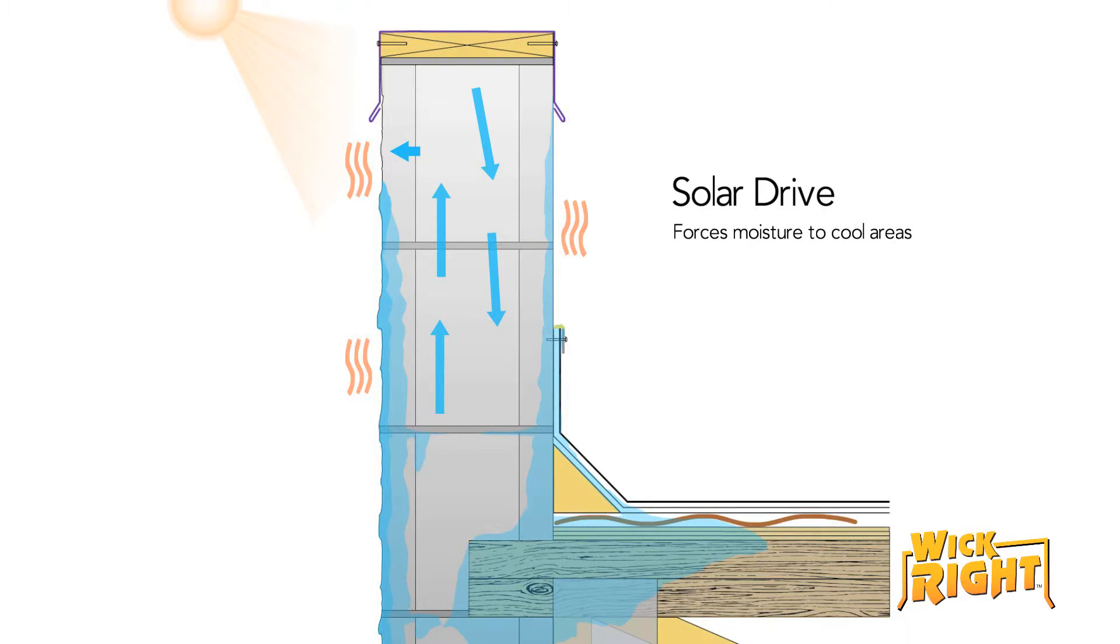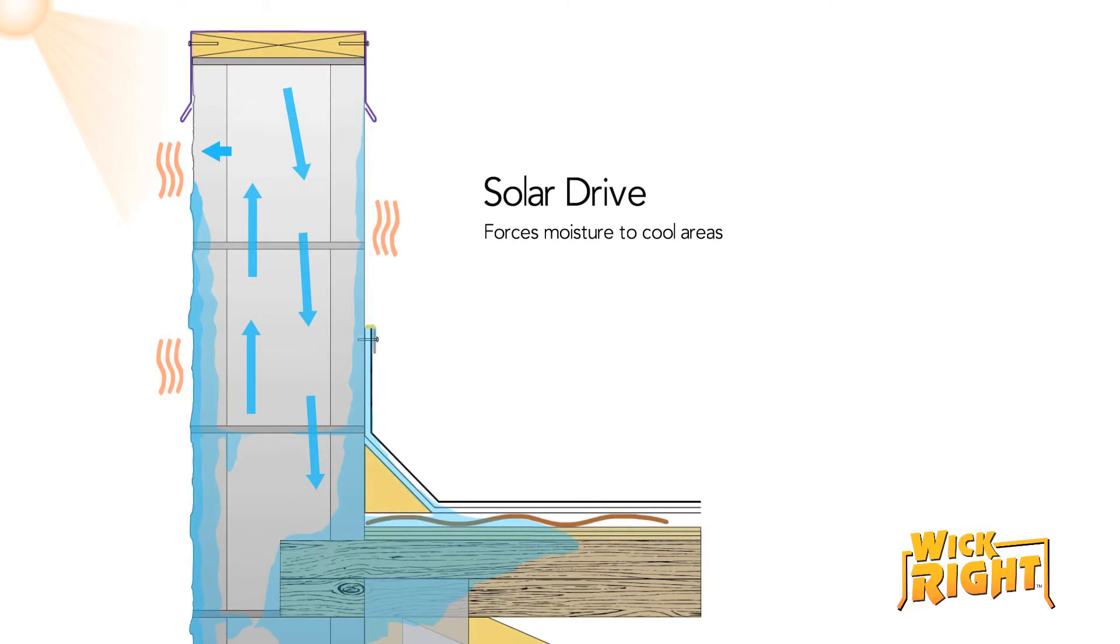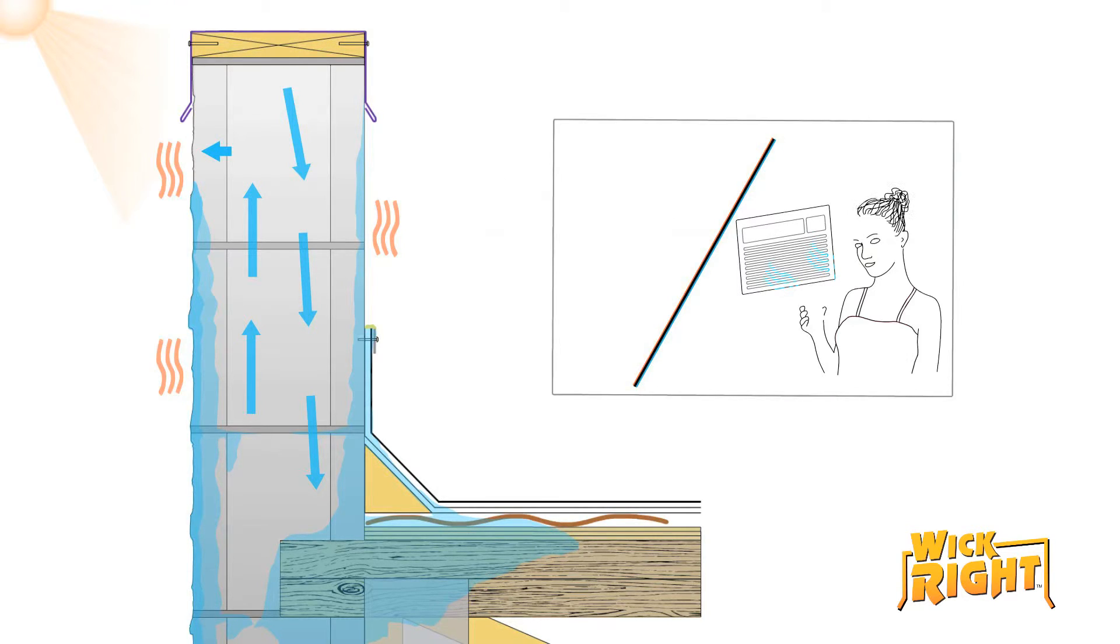Basic physics and a phenomenon known as solar drive forces moisture to travel from hot areas to cool areas, like the air-conditioned building interior.